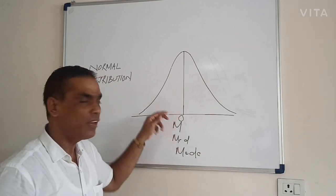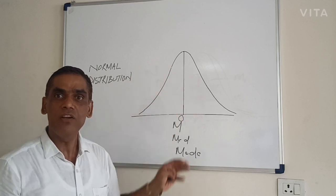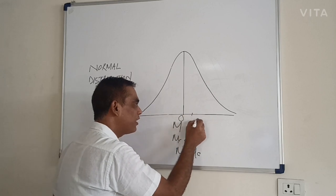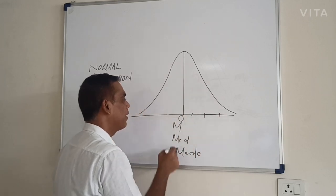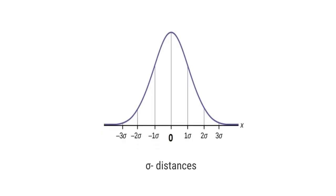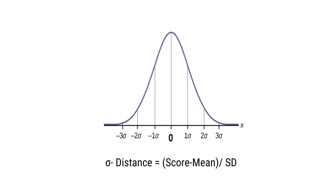The baseline to the left and right is divided into sigma units: 1 sigma, 2 sigma, 3 sigma on the right, and minus 1 sigma, minus 2 sigma, minus 3 sigma on the left. These are called sigma distances. Sigma distance is equal to the score minus the mean, divided by the standard deviation.